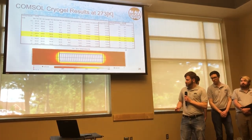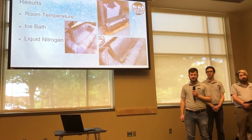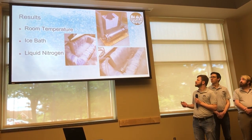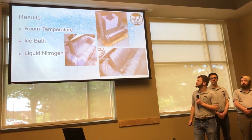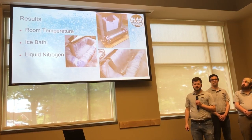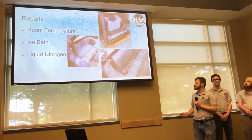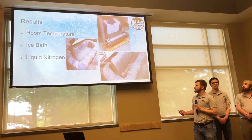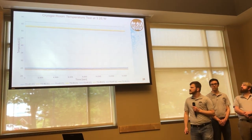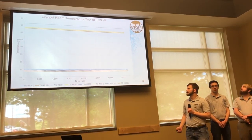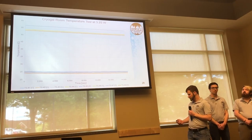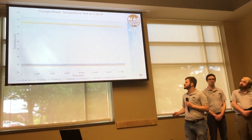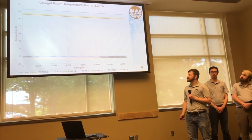For our experiment we had three main types of tests: ambient room temperature at about 20 degrees Celsius, an ice bath at zero degrees Celsius, and a liquid nitrogen test at negative 200 degrees Celsius. This is our first ambient air temperature test using the cryogel. All tests presented today were run at 3.25 watts for continuity. We had a temperature difference of about 30 degrees Celsius.